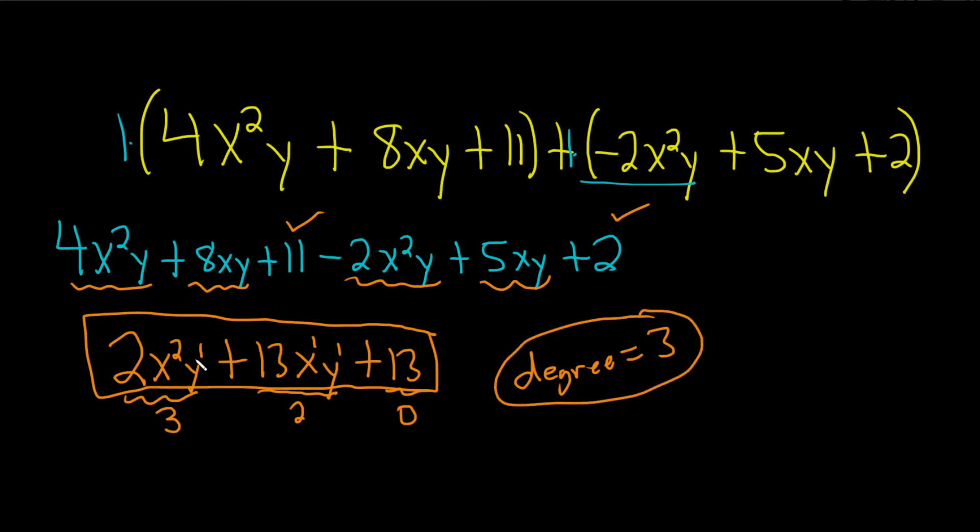So to find the degree of the polynomial, you basically find the degree of each term and then take the biggest one. And to find the degree of each term, you add up the exponent. And whenever you have a number, you can just say it's 0, so no big deal. I hope this video has been helpful.